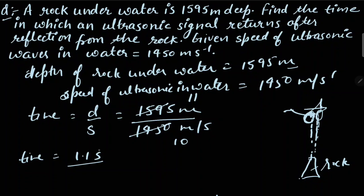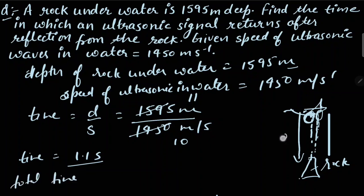लेकिन यह जो 1.1 second मिला है, यह ship से rock तक signal पहुंचने का time है केवल। क्योंकि reflection के बाद signal को वापस भी जाना है, तो वापस जाने में भी same time लगेगा। Ship से rock तक का distance D है, तो total distance 2D होगा। इसलिए total time = 2 × 1.1 = 2.2 seconds।